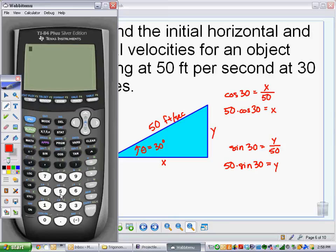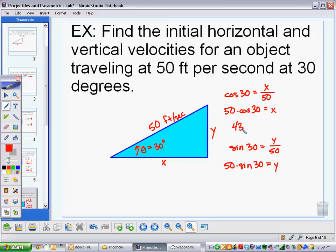So now I'll get out of here, and I can just type in 50 times the cosine of 30. That comes out to 43.3. So 43.3 approximately. And don't forget your units.